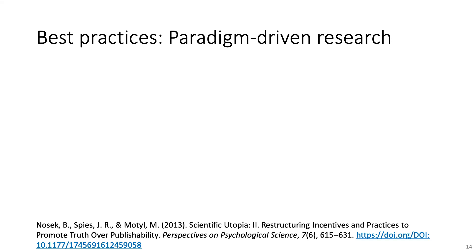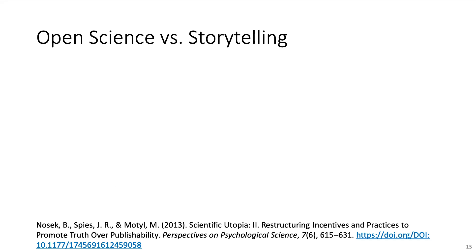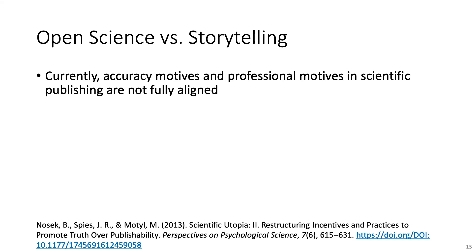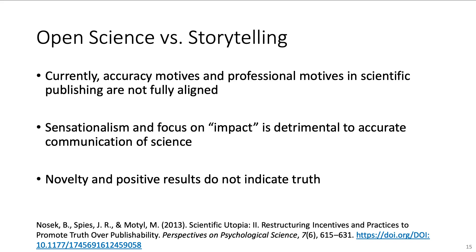Part of the change in science must happen through its culture and reception. Paradigm-driven research which carefully tests the robustness and generalizability of theories by systematic variation of single aspects is often disregarded as incremental by old-school scholars, and it is still very difficult to publish this type of research in high-impact journals. This is one example where accuracy motives and professional motives in scientific publishing are not fully aligned. However, this focus on novelty and scientific sensations is detrimental to accurate communication and reporting. Research culture must change towards the appreciation of truth and rigor instead of novelty and positive results.